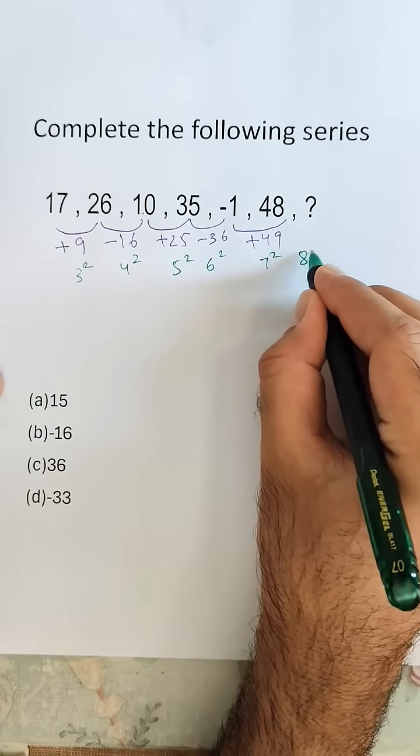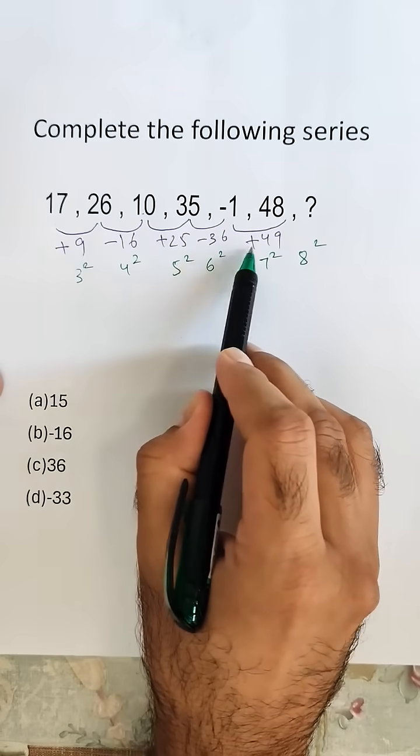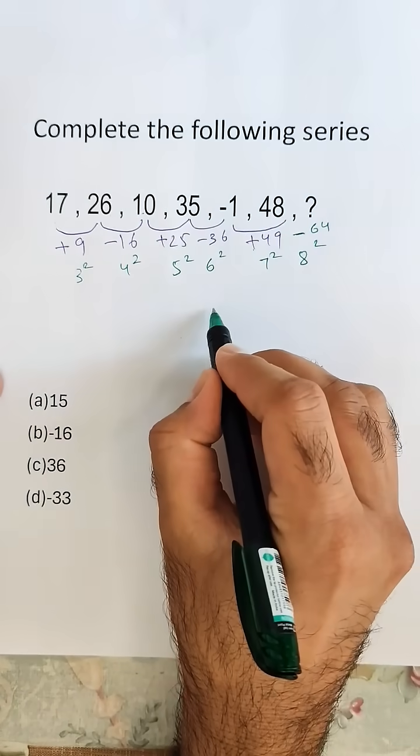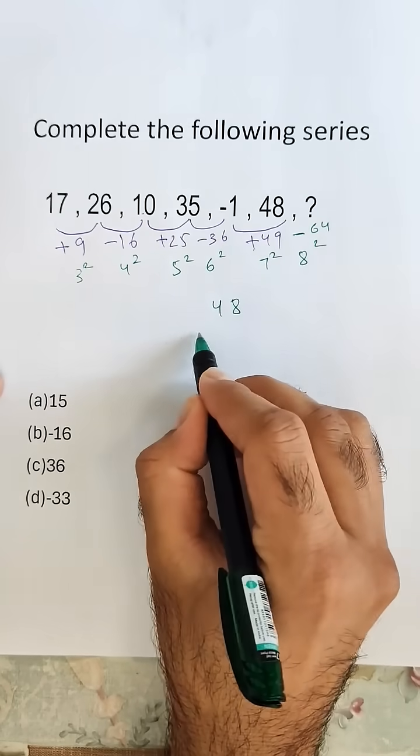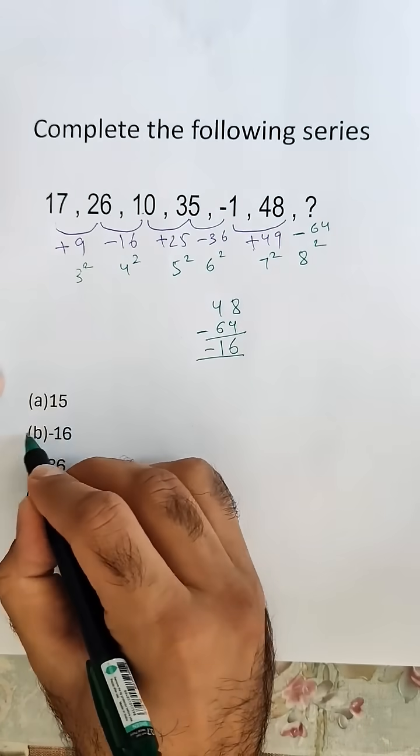Now if you look at the sign, this one is positive, negative, positive, negative, positive. So next will be minus 64. So 48 minus 64 will be minus 16, so option B.